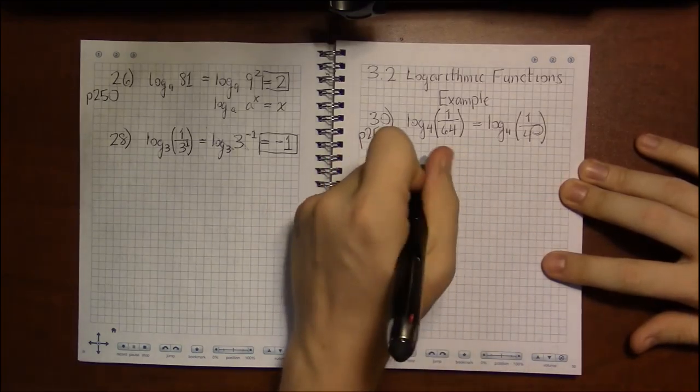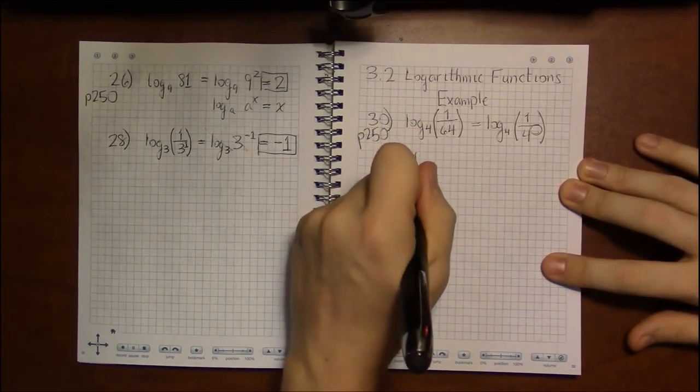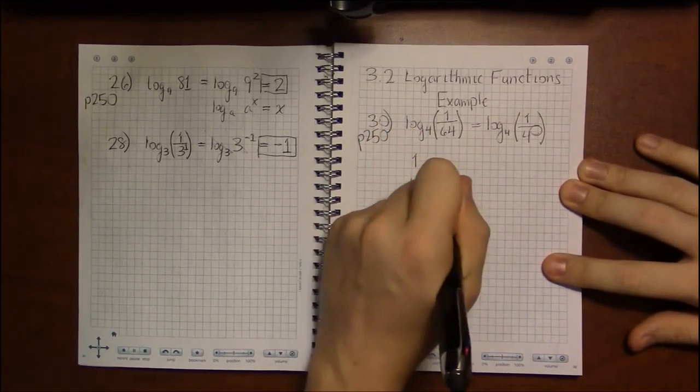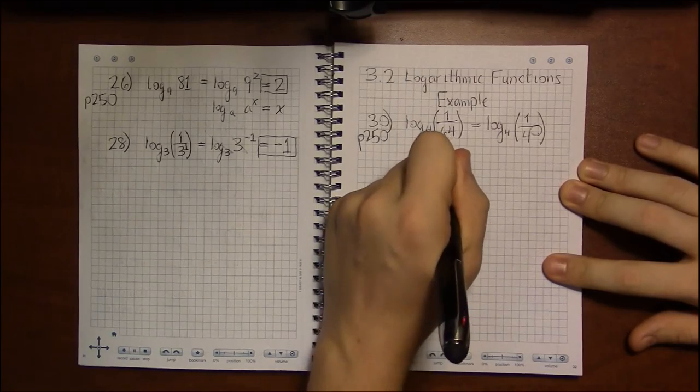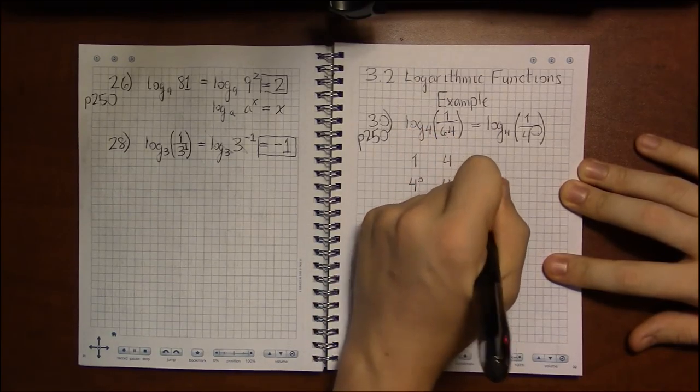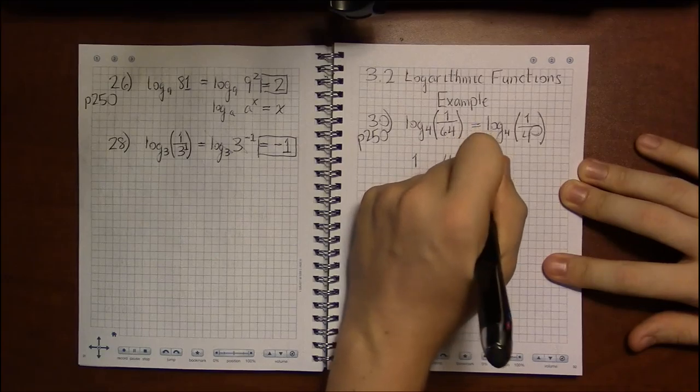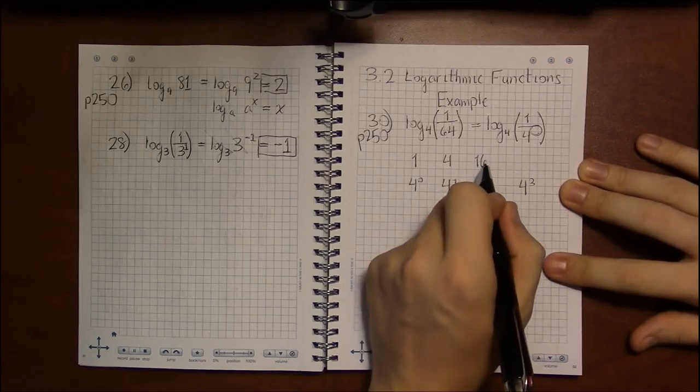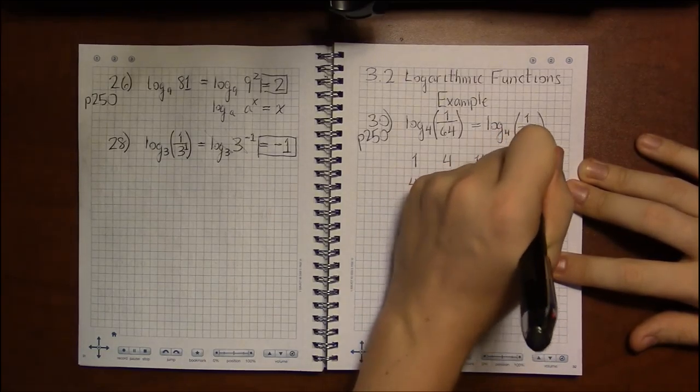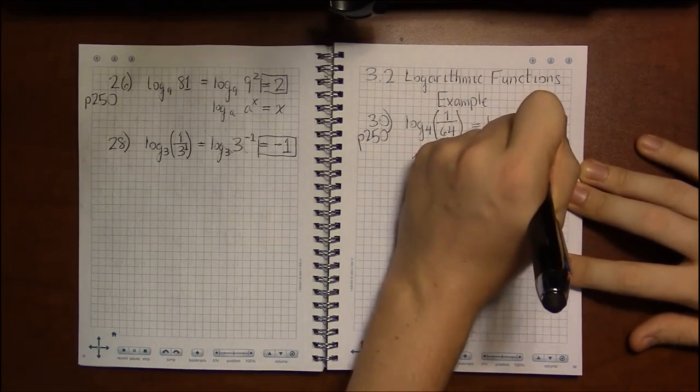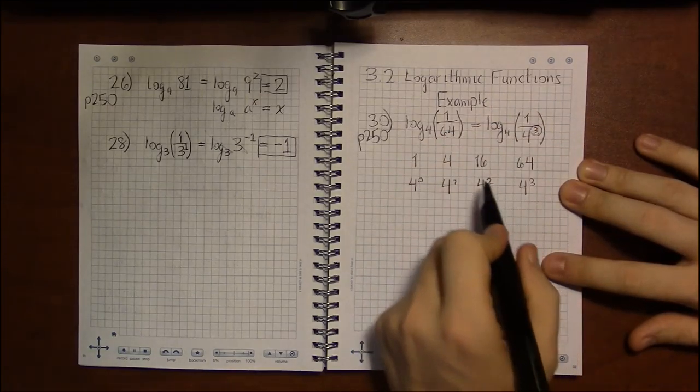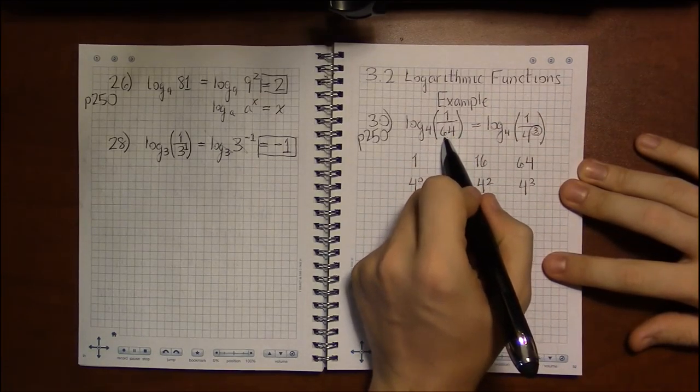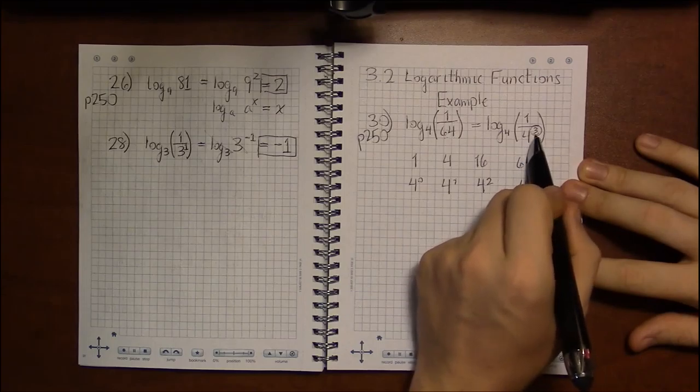So let's see. 4 to the 0 is 1. 4 to the first is 4. 4 squared is 16. 4 cubed is 16 times 4. Well, that's nice. 4 cubed is 64.